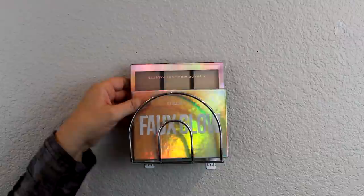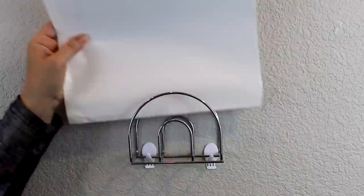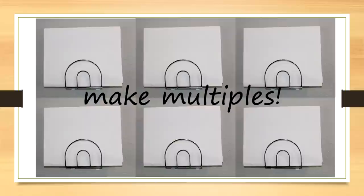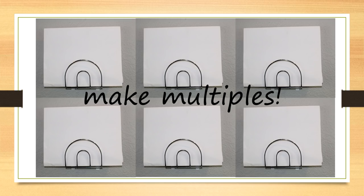You might remember these makeup palette holders from my first organization video, which use Dollar Tree napkin holders hung on the wall with removable hooks. Turns out they also make great file holders as well. And then like many of the ideas in this video, you can make multiples and hang them horizontally, vertically or both to suit your needs.